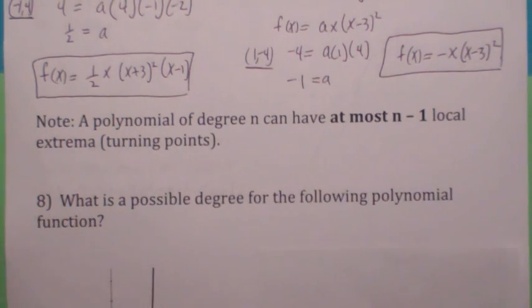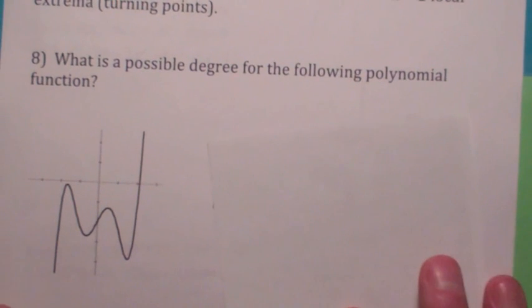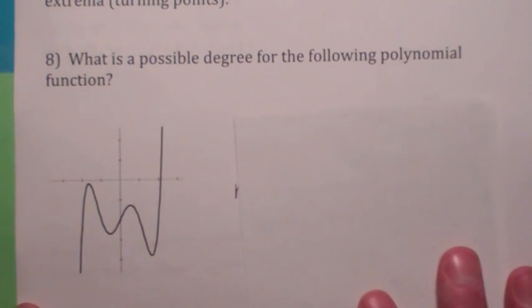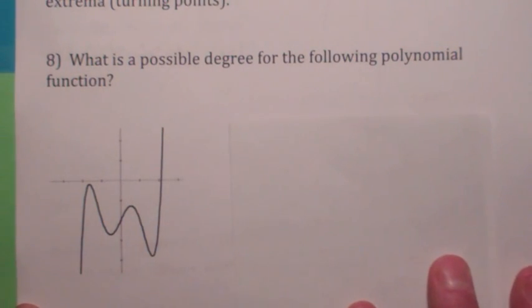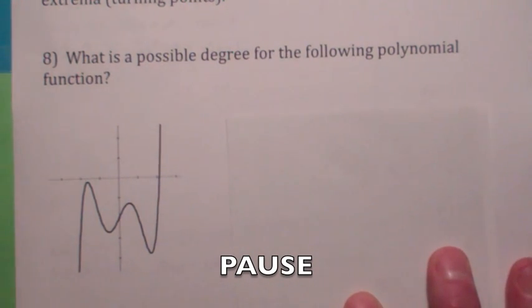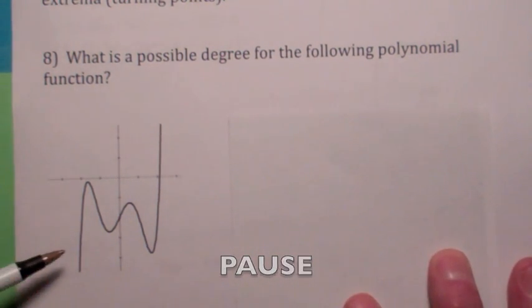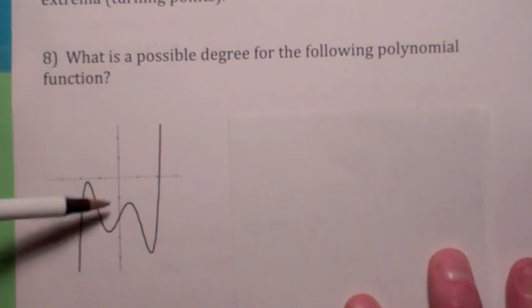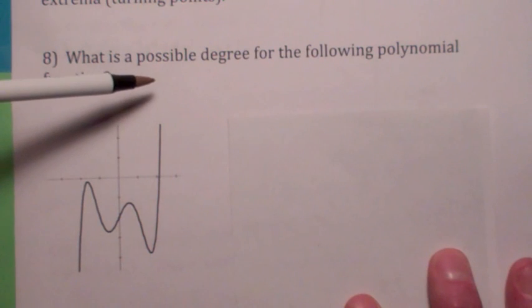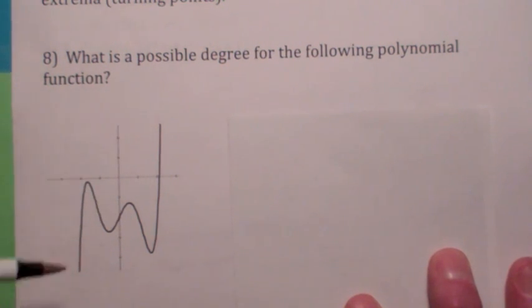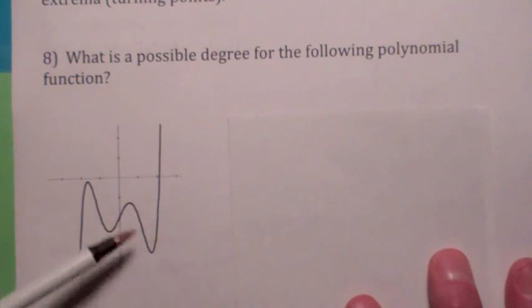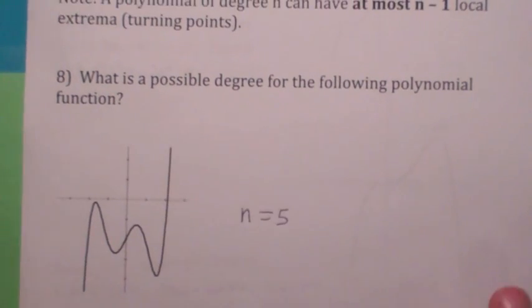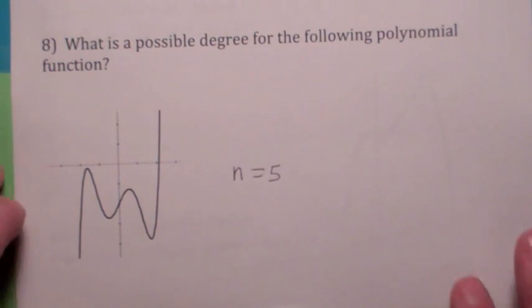All right, so this is kind of a fun problem. How about this one? I'm asking you a question like this. What is the possible degree for this polynomial function? Go ahead, hit the pause and think about that. Okay, well, look at the end behavior, first of all. You should have observed it's going to have the same end behavior as an odd power function, right? How many turning points do you see? One, two, three, four, so I would say one possibility would be five, although seven might be possible too, right?